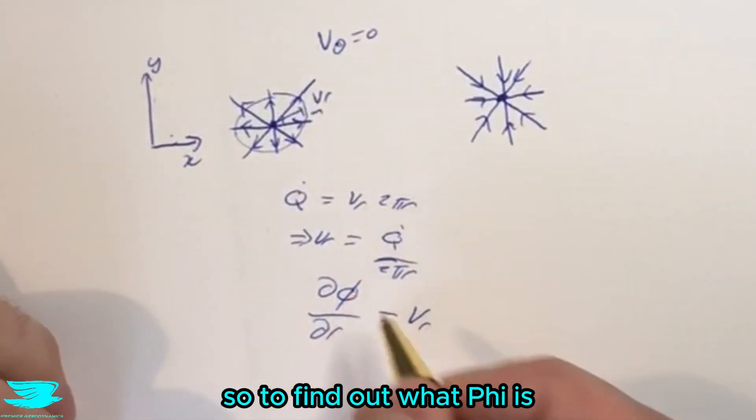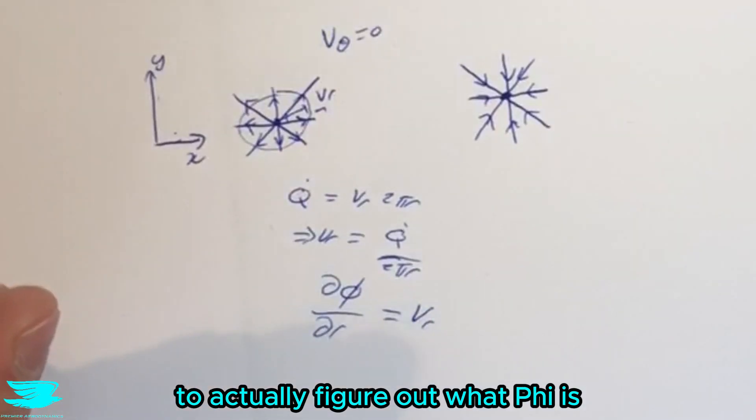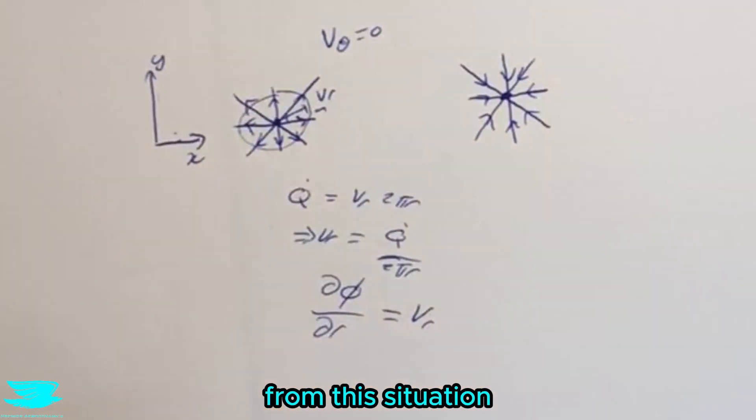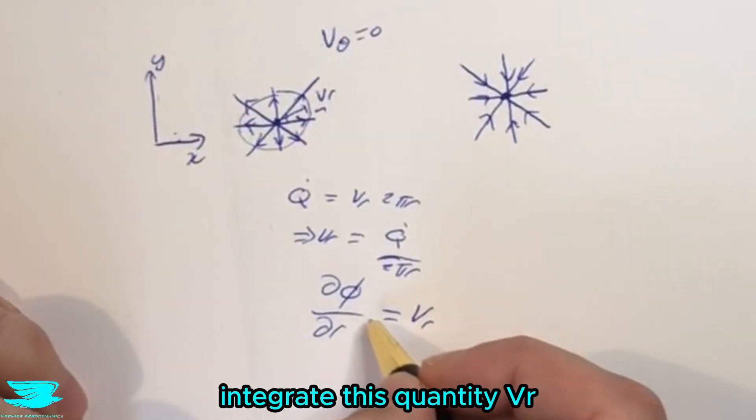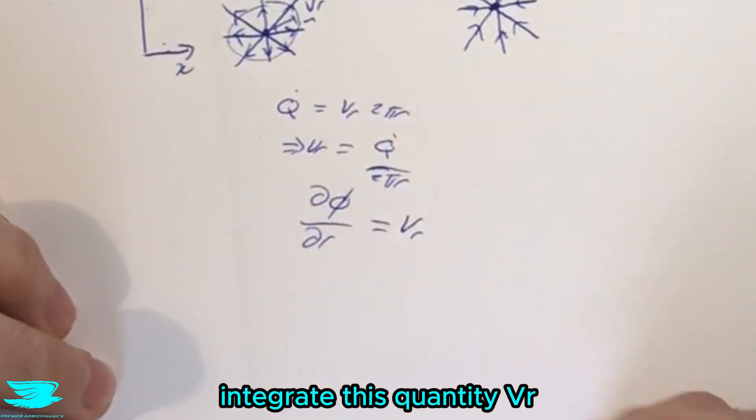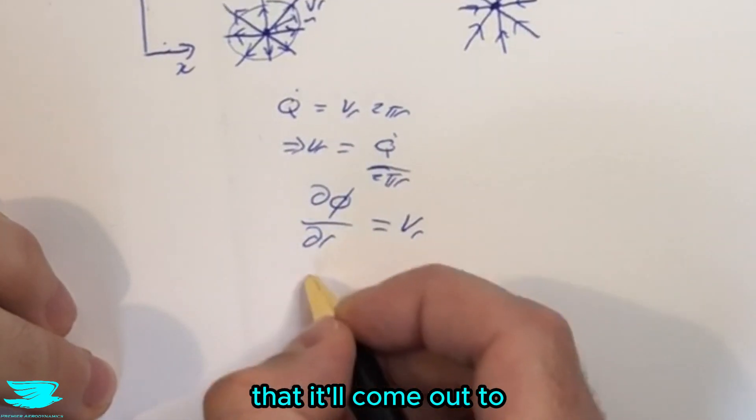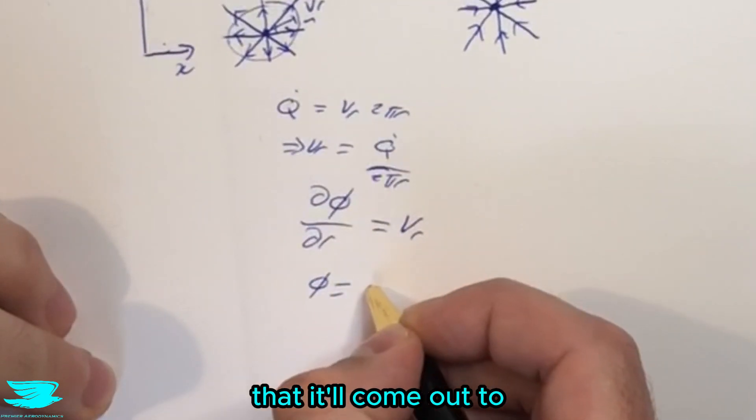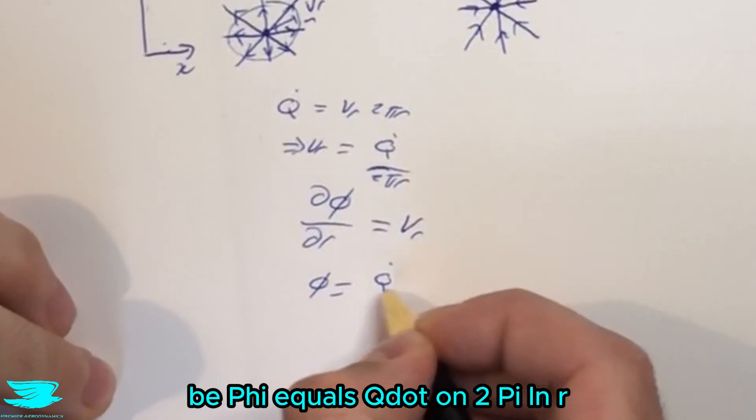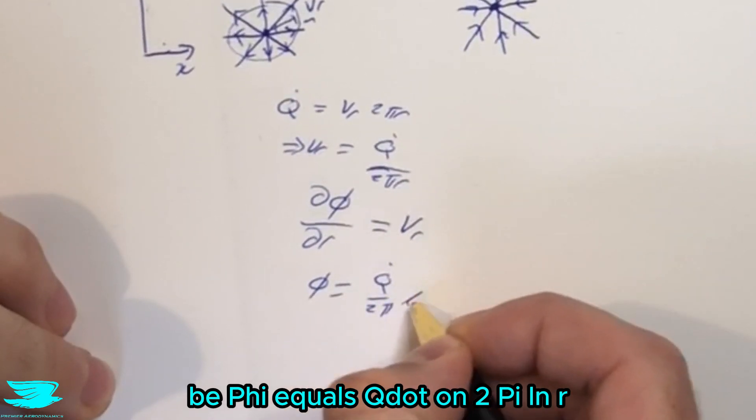So to find out what φ is, to actually figure out what φ is the velocity potential from this situation, all we need to do is integrate this quantity v_r. And if we do that, we'll come out to be φ equals q dot over 2π times ln(r).